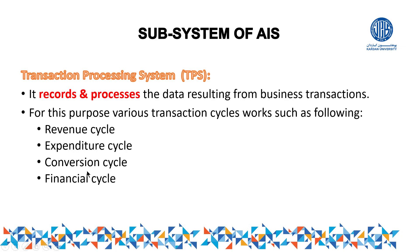The next cycle is the conversion cycle, which is especially important for manufacturing organizations that convert raw materials into finished goods. A specific branch of accounting called cost accounting records transactions such as inventory, work-in-progress, finished goods, raw materials, labor costs, and overhead. Finally, the financial cycle covers where money is received and spent, investments made, loans taken, bank deposits, and interest received or paid.